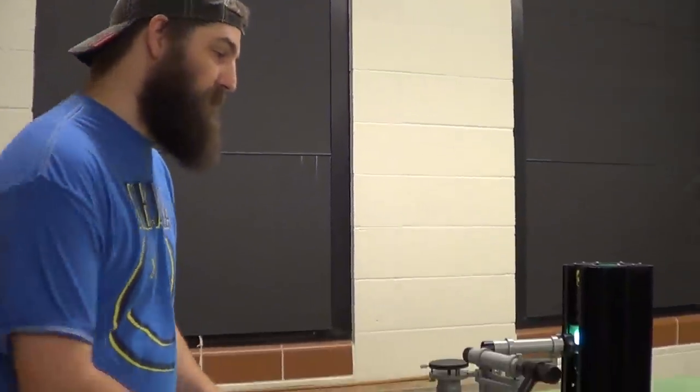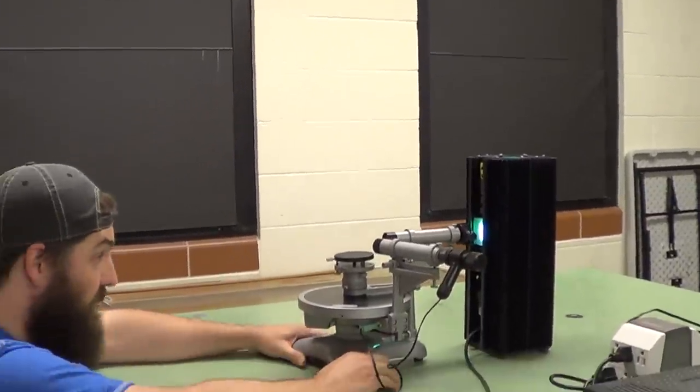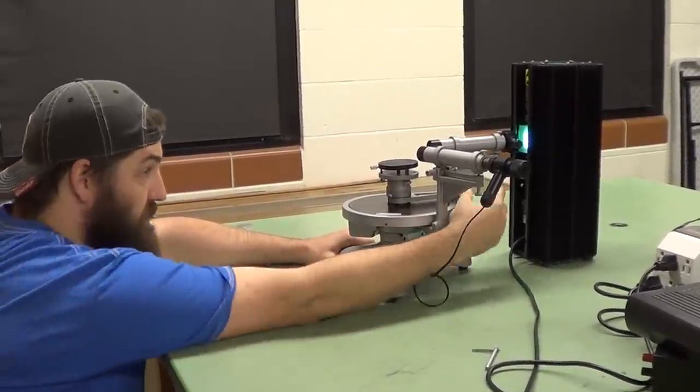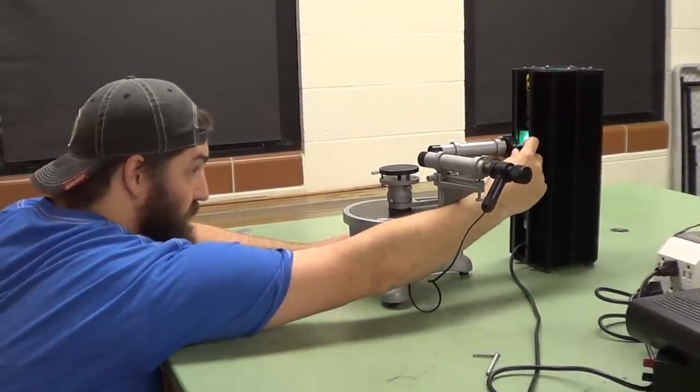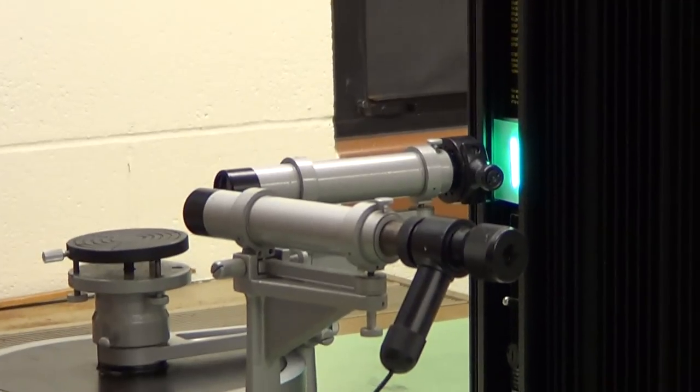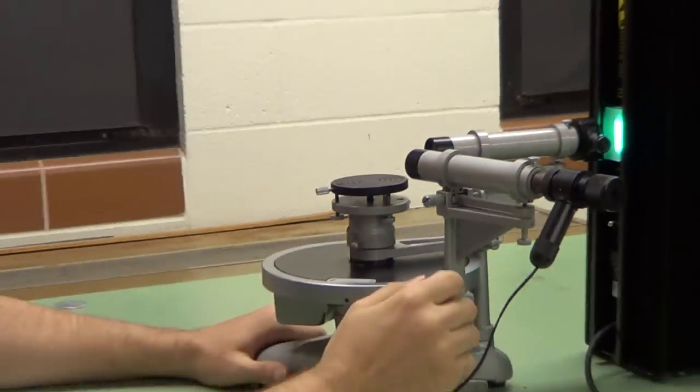The first step in this experiment is to align your collimating scope with your light source. You want to look through the scope and adjust the width of the slit with this screw until you get as narrow a beam as you can and it's still relatively bright.